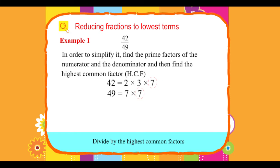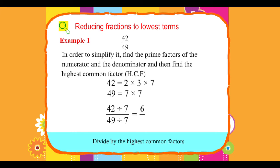Divide by the highest common factor. 42 divided by 7, upon 49 divided by 7, equals 6 upon 7.